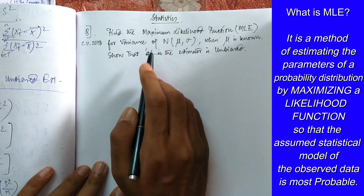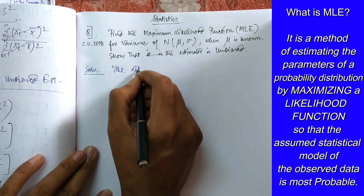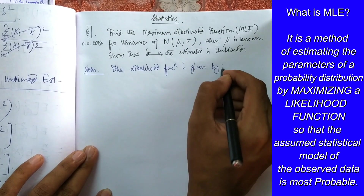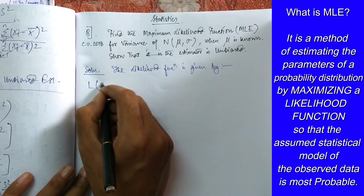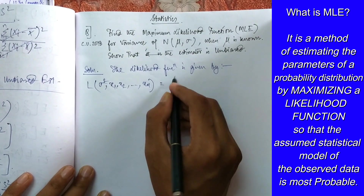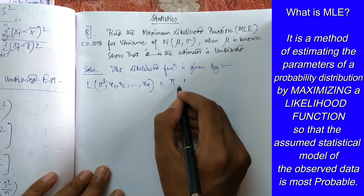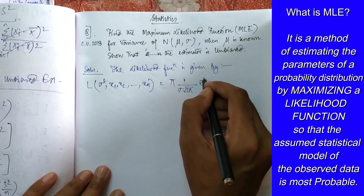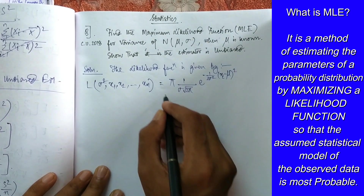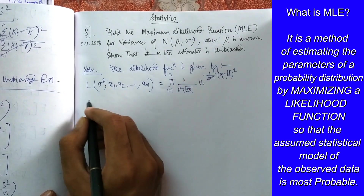For this we need to know the PDF of the normal distribution. The likelihood function L(σ², x₁, x₂, ..., xₙ) is given by the product of the PDF of the normal distribution, which is 1/(σ√(2π)) times e to the power of minus 1/(2σ²) times (xᵢ - μ)², where i is running from 1 to n, written in product form.